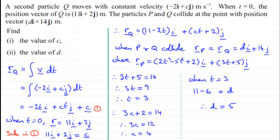So we've got our two values then. In part one, we had to find the value of C, so C equals 4. And in part two, we had to find the value of D, and so D equals 5. All right.